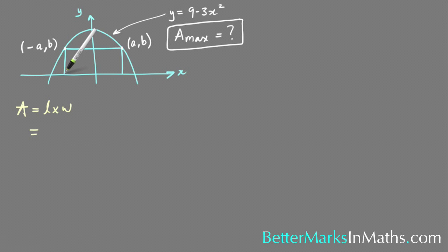The length of the rectangle from here to here—the x coordinate at this point would be a, and because this is minus a, this would be minus a as well. So the length is 2a, and the width is just the height, which is the y coordinate at this point, which is b. So the area is 2ab.